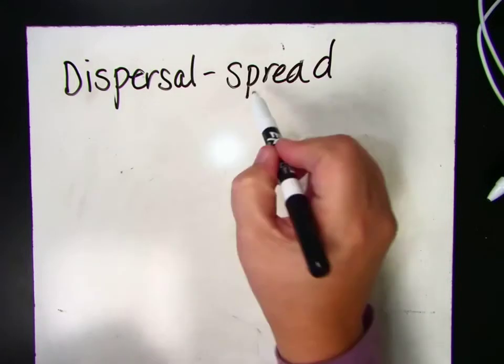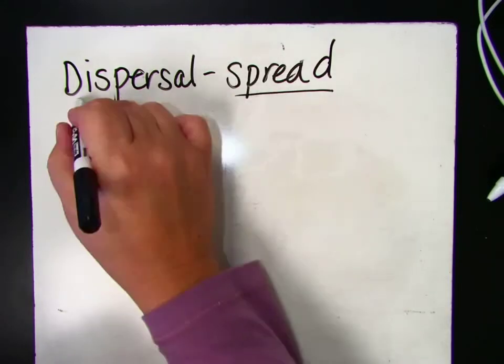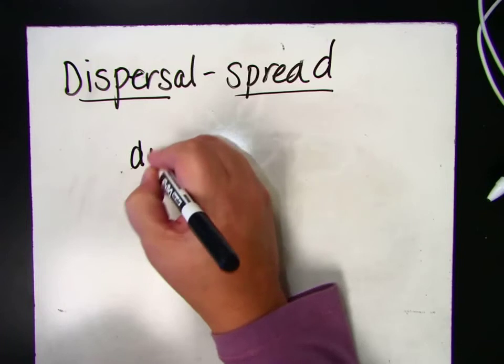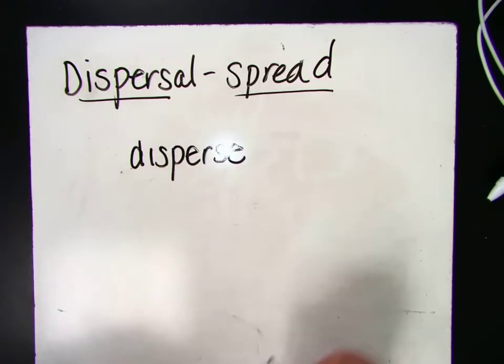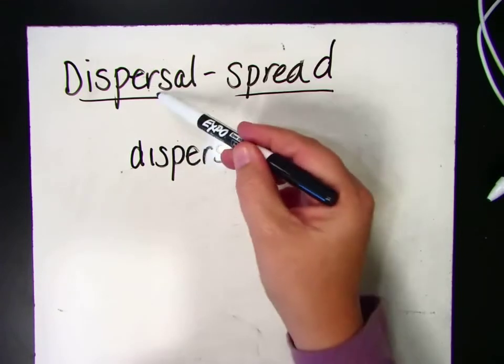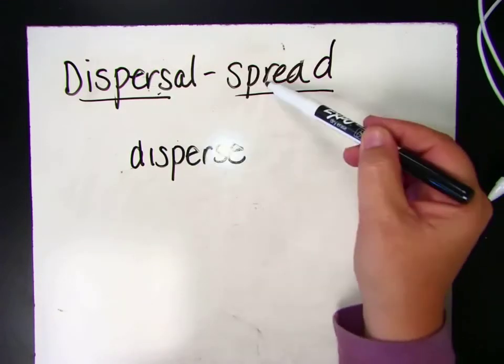So when seeds spread, or plants spread their seeds, they're dispersing them. You might see the word disperse. Those words are the same word. Dispersal is the process of, and to disperse is spreading.